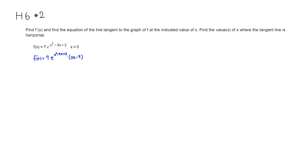We want to find the equation of the tangent line at x equals 0. When x equals 0, we're going to have a y-intercept, so I'll find the slope and intercept. The slope m is equal to f prime of 0. Plugging in 0, we get 7 times e squared times negative 9, which gives us negative 63 e squared.